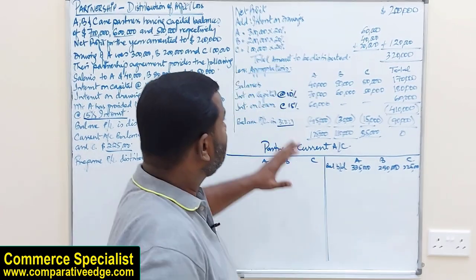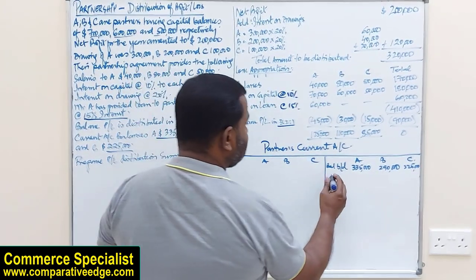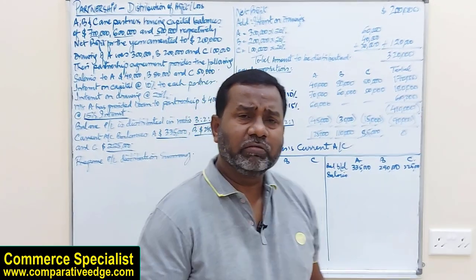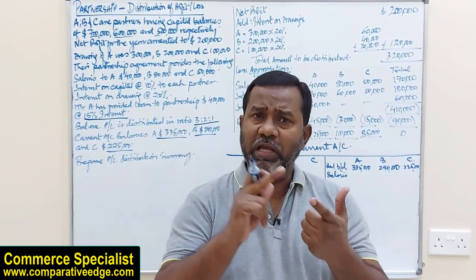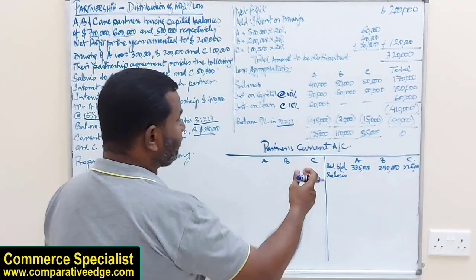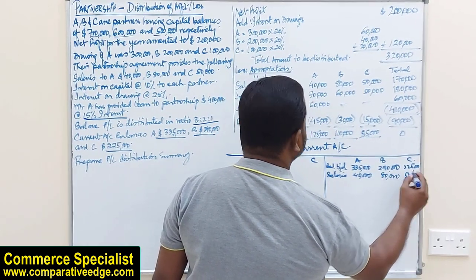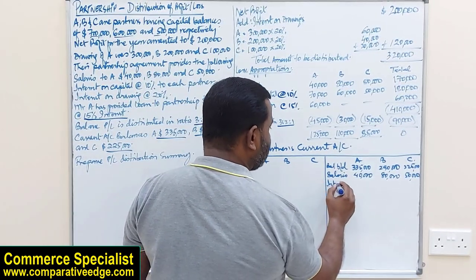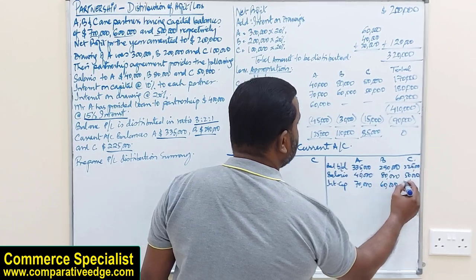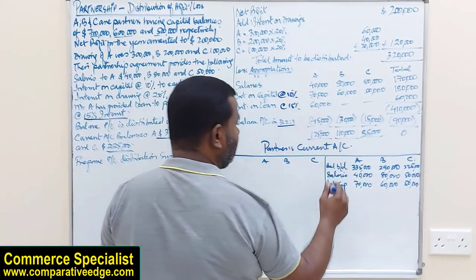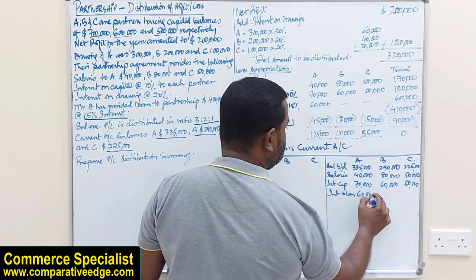Once opening balances are written, the next step is to post the appropriations. Salaries are credited to the current account because they increase the partner's balance — increase in capital or current account is a credit. So 40,000 for A, 80,000 for B, and 50,000 for C are credited. Interest on capital is also credited: 70,000 for A, 60,000 for B, and 50,000 for C. Interest on loan is only for Mr. A — 60,000 is credited to A's current account; the other partners receive no loan interest.